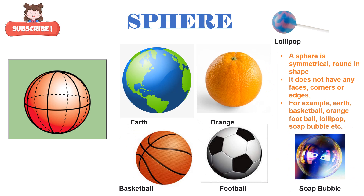Now let's learn the next 3D shape, which is sphere. S-P-H-E-R-E, sphere. Now let's learn a few properties of a sphere. A sphere is symmetrical and it is round in shape. It does not have any faces, corners, or edges. A few examples of sphere are earth, orange, basketball, football, soap bubble, etc.